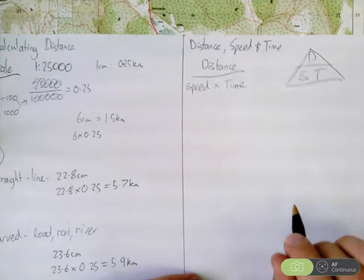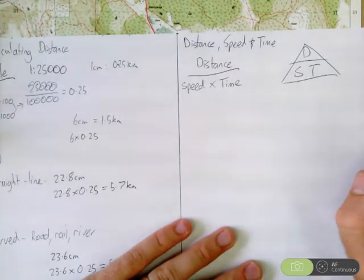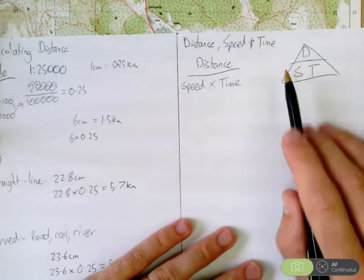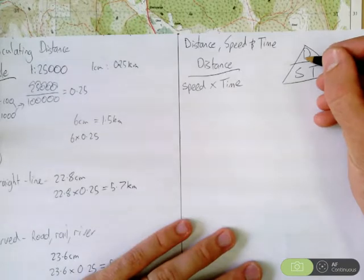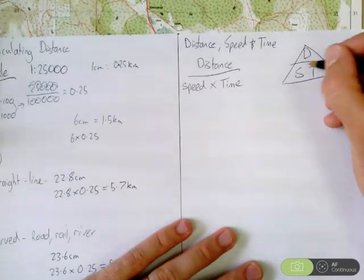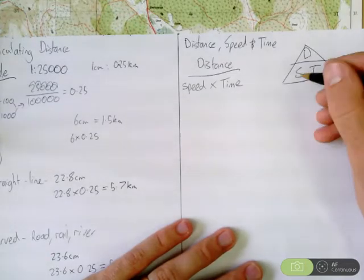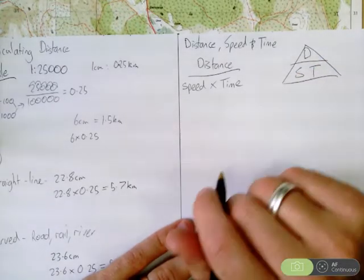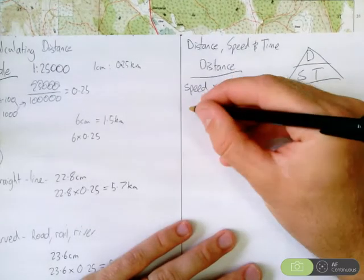Now, with this triangle, we know how to calculate any one of these given two other variables. So, D is up the top, it comes first in the alphabet. So, we have D up the top of the triangle, it's the smallest letter. As long as you remember that, it doesn't matter if you get S and T mixed up, it doesn't change anything, but D has to be up the top.